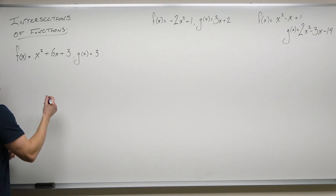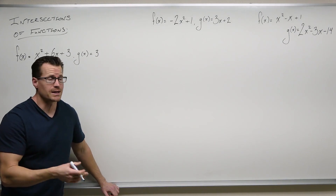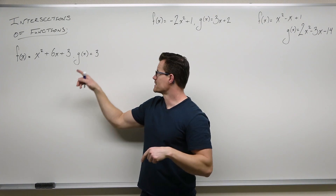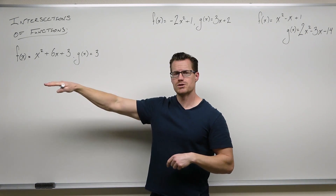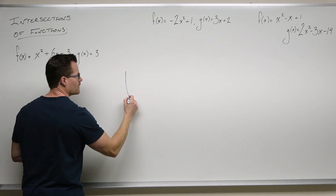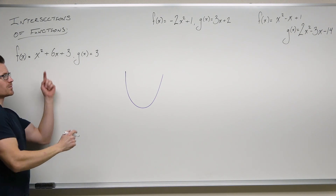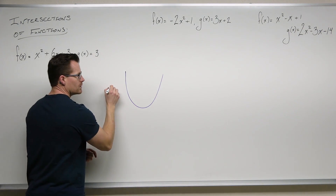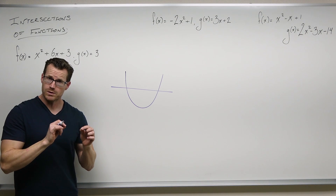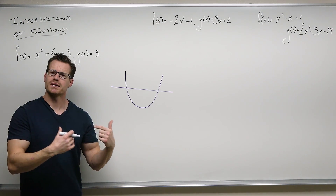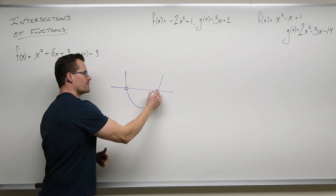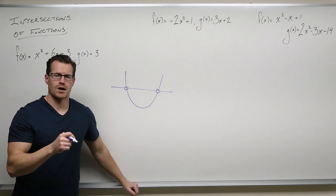Now what we're really finding — if you think about it, this is a parabola that's upward opening, and this is a constant, which is a horizontal line. So really what we're finding, on some parabola and some horizontal line — if those things intersect, it will be found by setting the functions equal, and we'll find the points of intersection: an x comma a y.